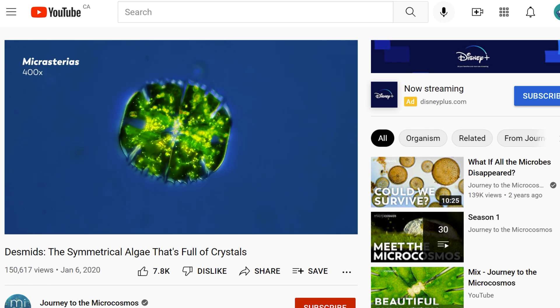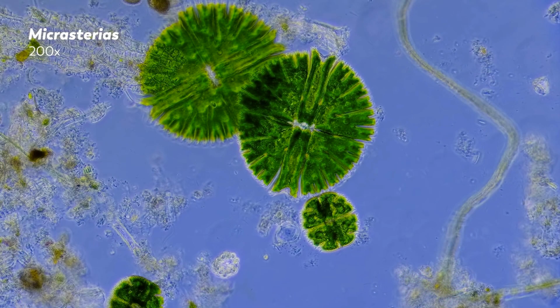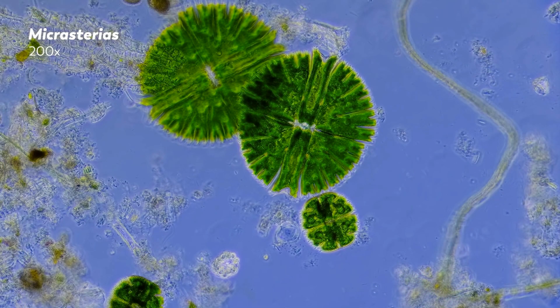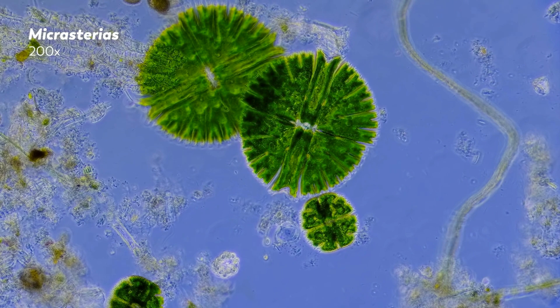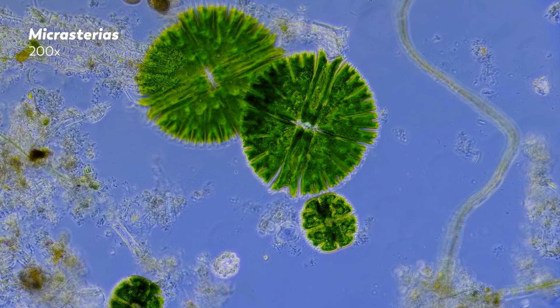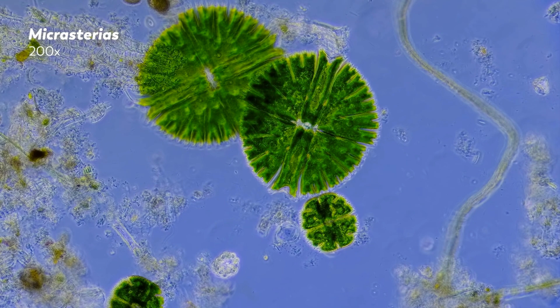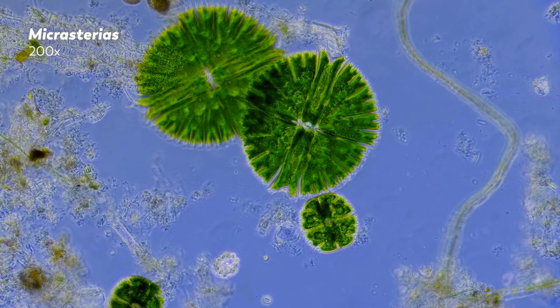And he asked this question. Desmids aren't unique in having some kind of symmetry. We see symmetry all across nature, to the extent where asymmetry might reveal more about how an organism works than symmetry does. But this kind of mirrored semi-cell arrangement is particularly striking to look at and to consider, which leads naturally to the question, why?